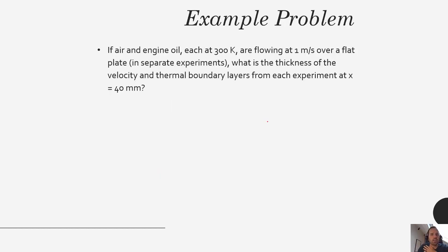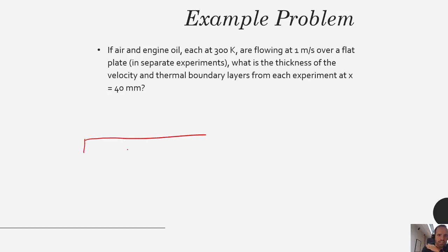So if air and engine oil, each at 300 Kelvin, are flowing at 1 meter per second over a flat plate in separate experiments, what is the thickness of the velocity and thermal boundary layers from each experiment? Now we're actually going to quantify rather than just think about this conceptually. Let's assume that the plate is heated, so we'll have a thermal boundary layer forming.